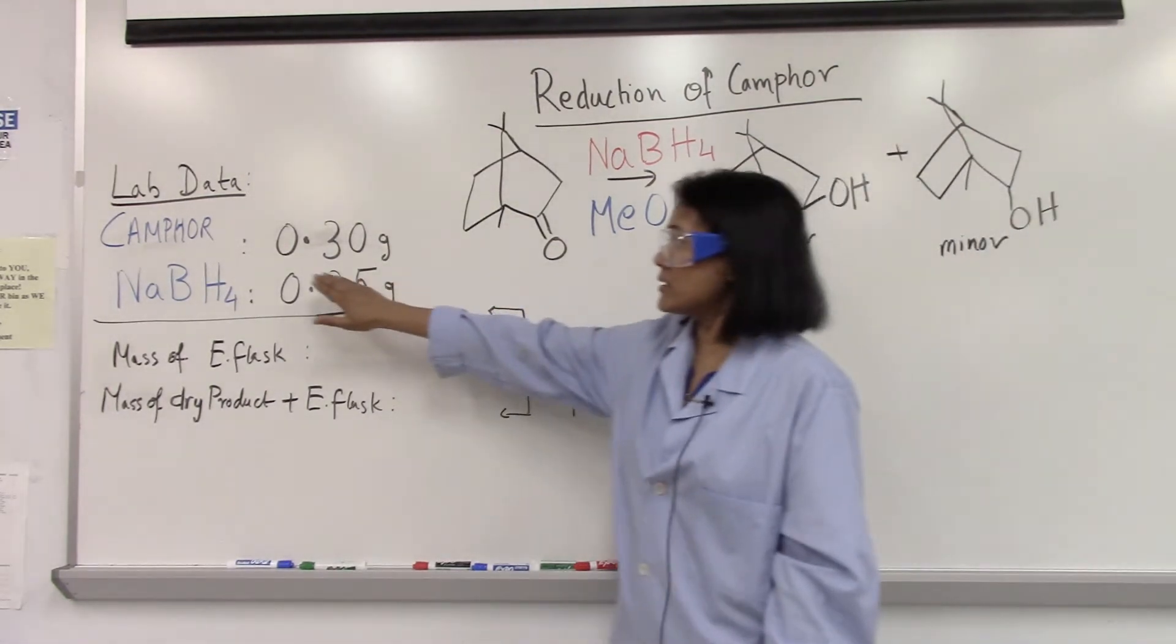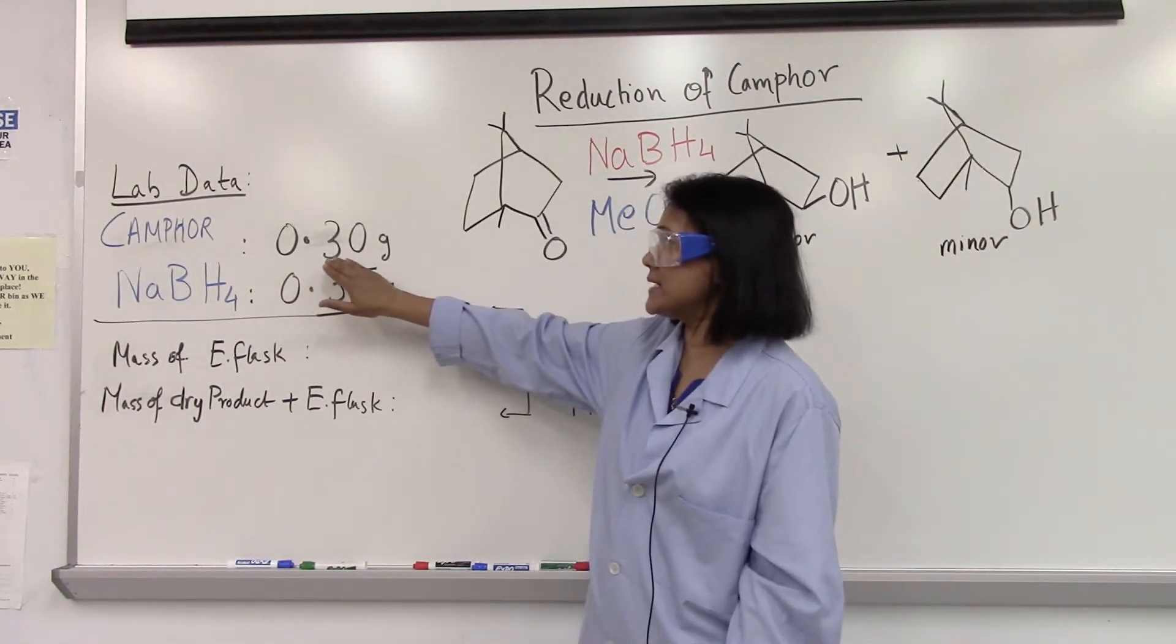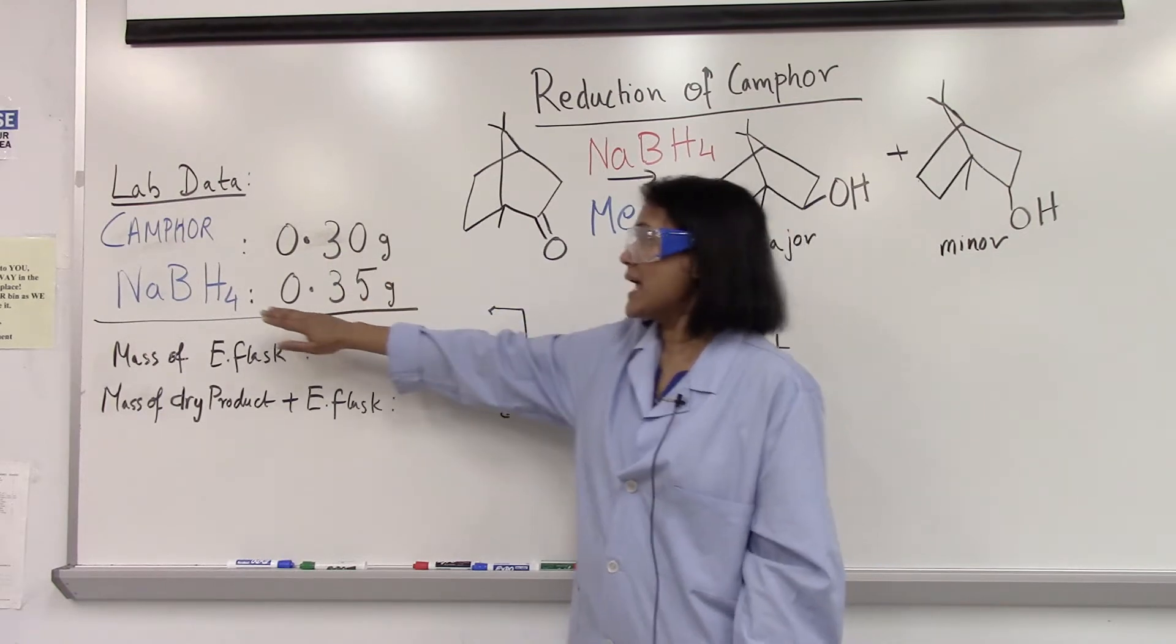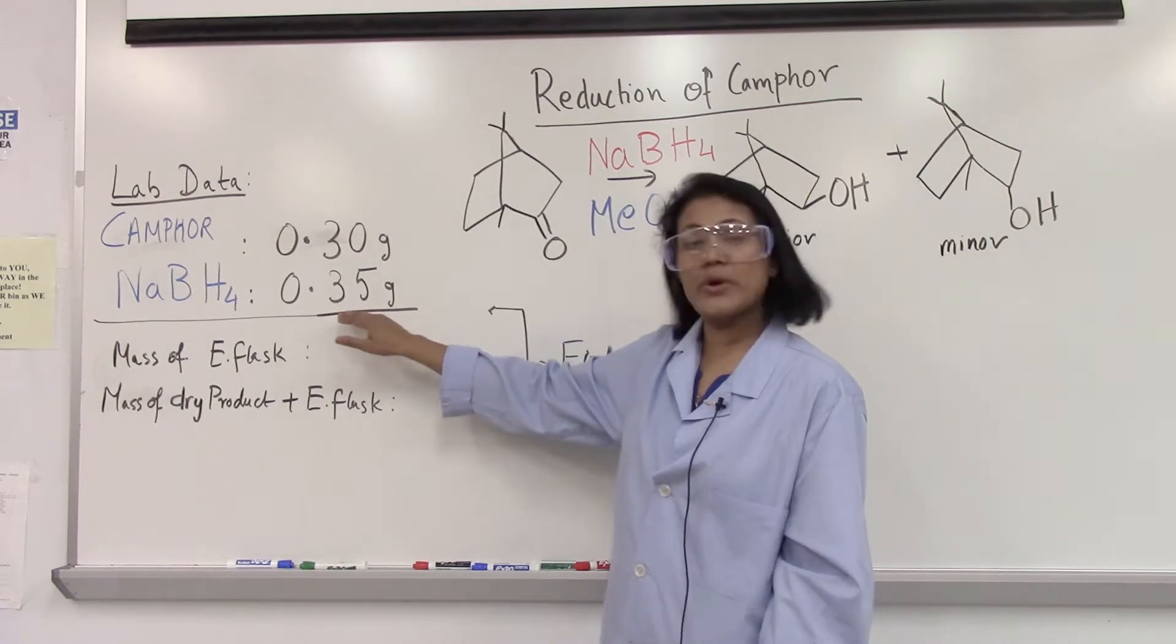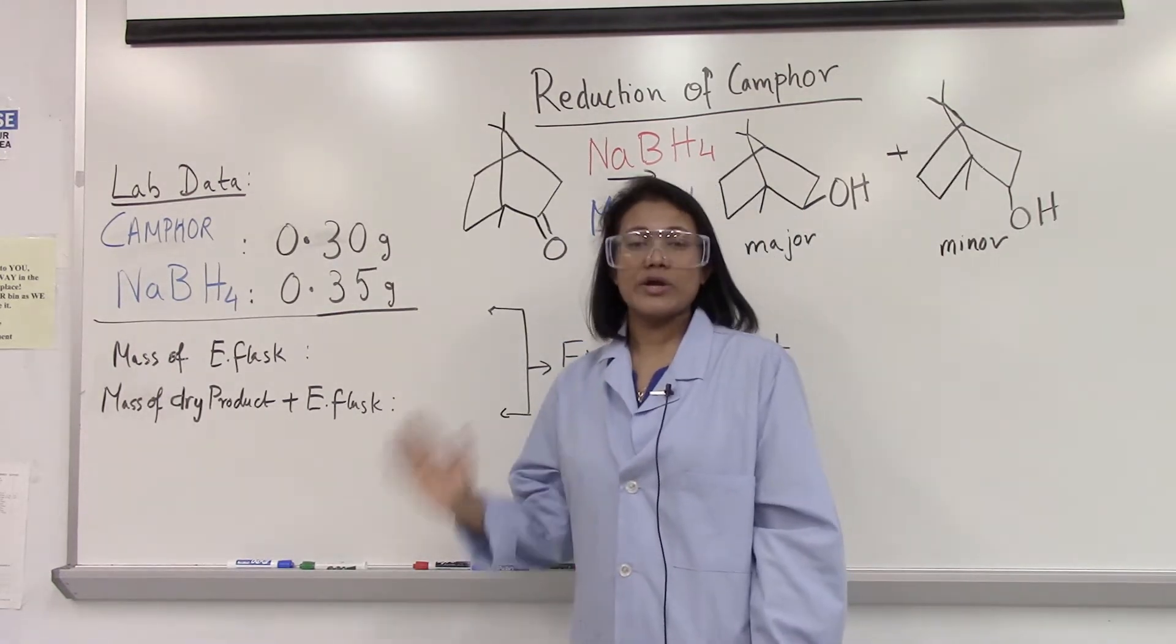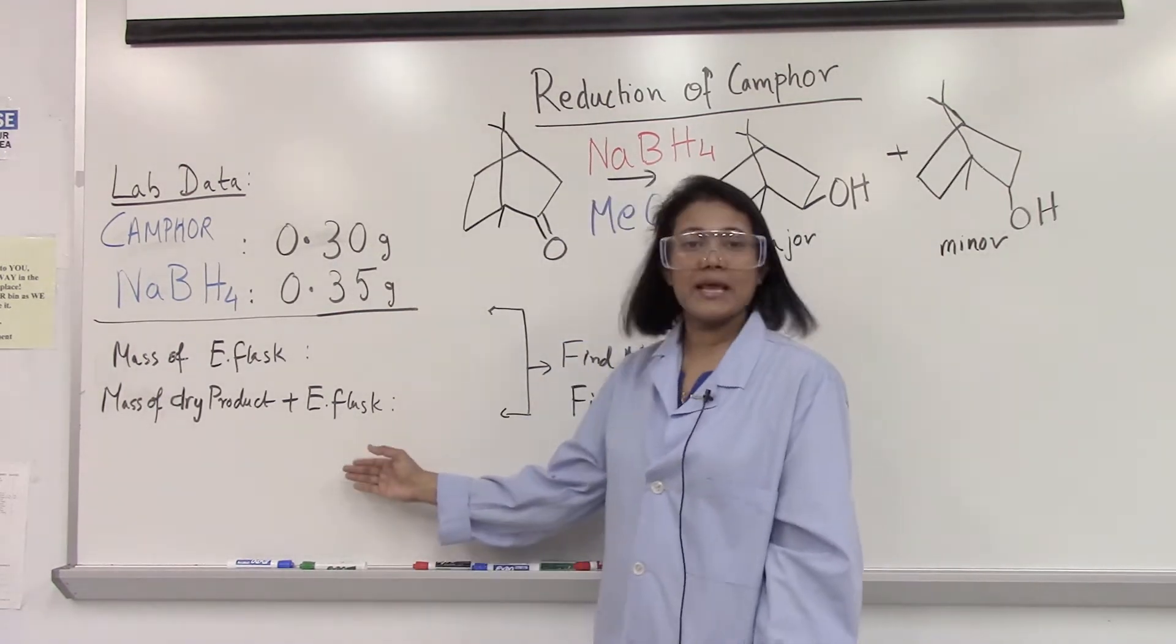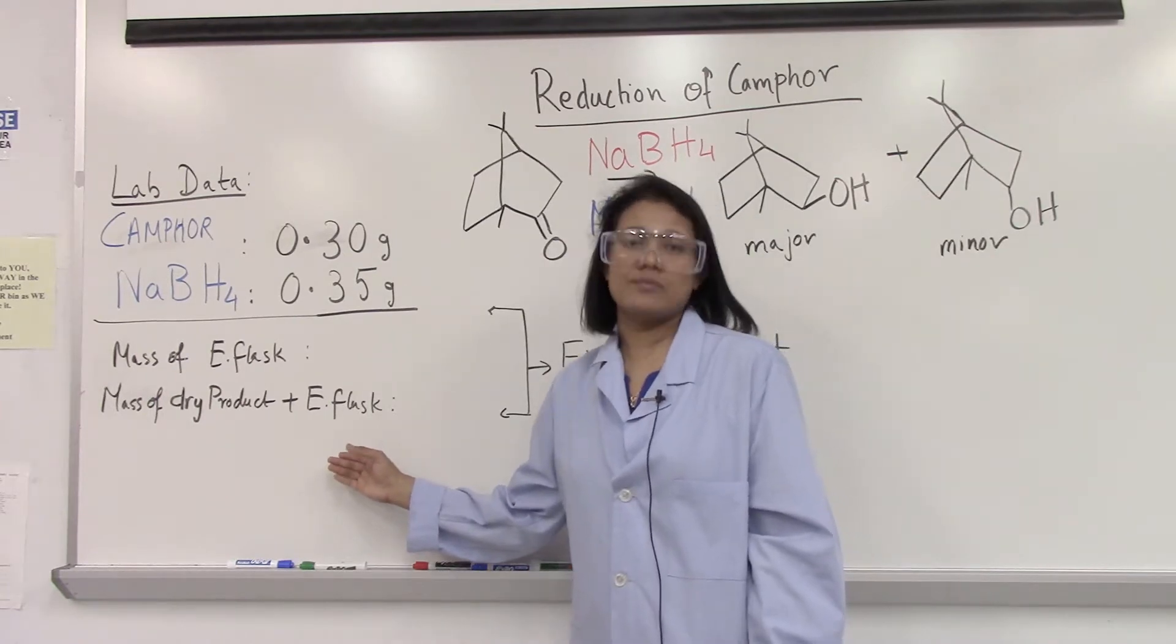I start with camphor which I weighed 0.30 grams, and reducing agent sodium borohydride I have weighed 0.35 grams. So we are going to start the reaction and at the end we are going to get the mass of the product.